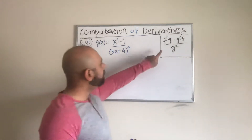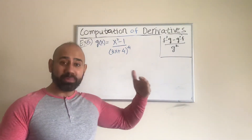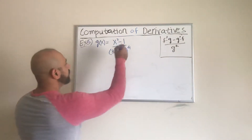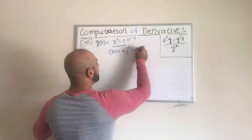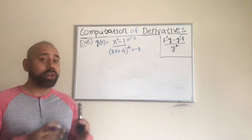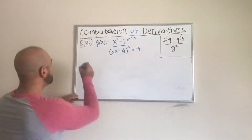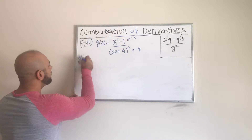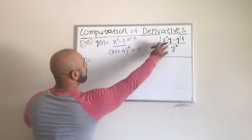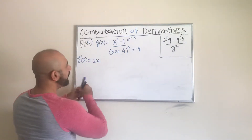I already have the general form for the quotient rule. If I consider f to be the numerator and g to be the denominator, let us consider x squared minus 1 to be my f function and the denominator to be my g function, so that we are consistent with the general formula for the quotient rule. Now I'm just going to apply the quotient rule. The derivative of f(x) is simply going to be 2x.